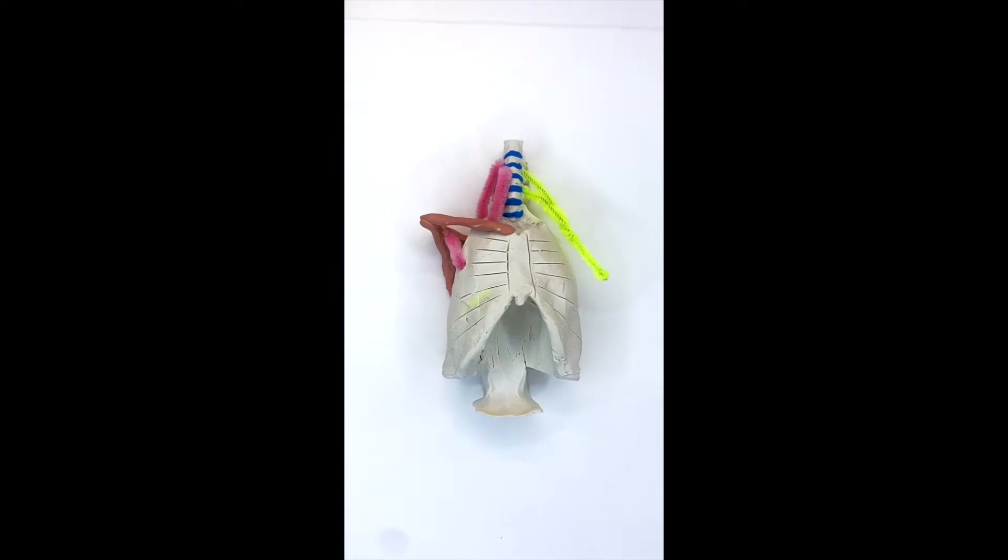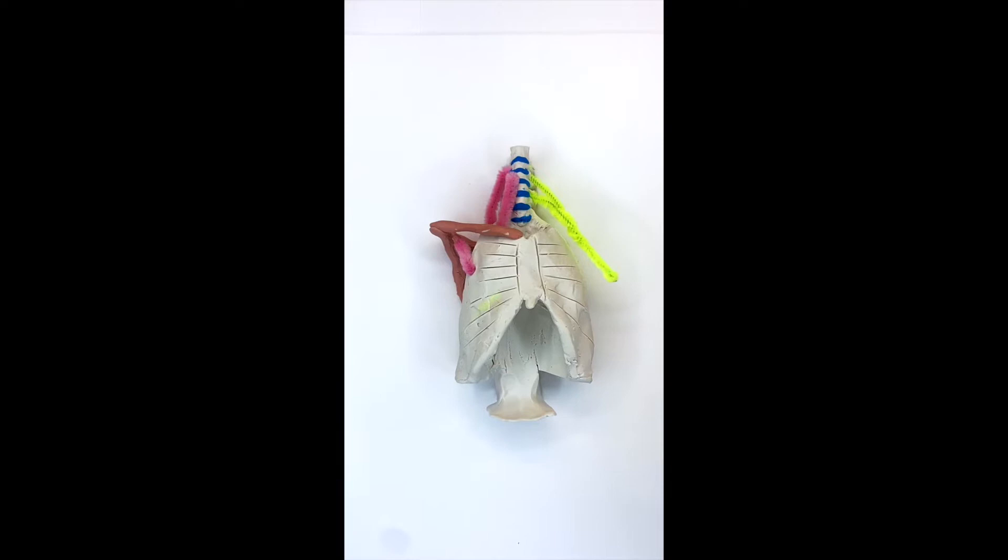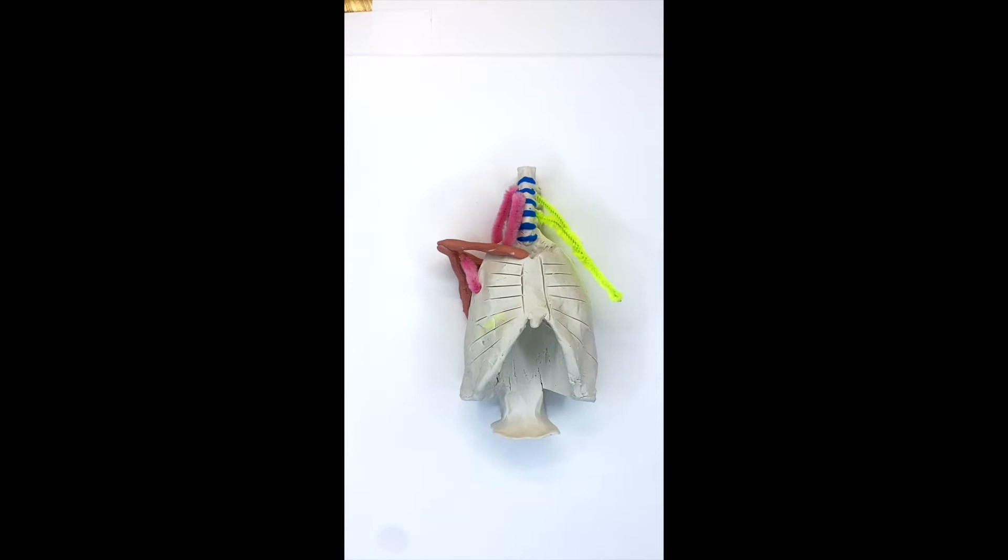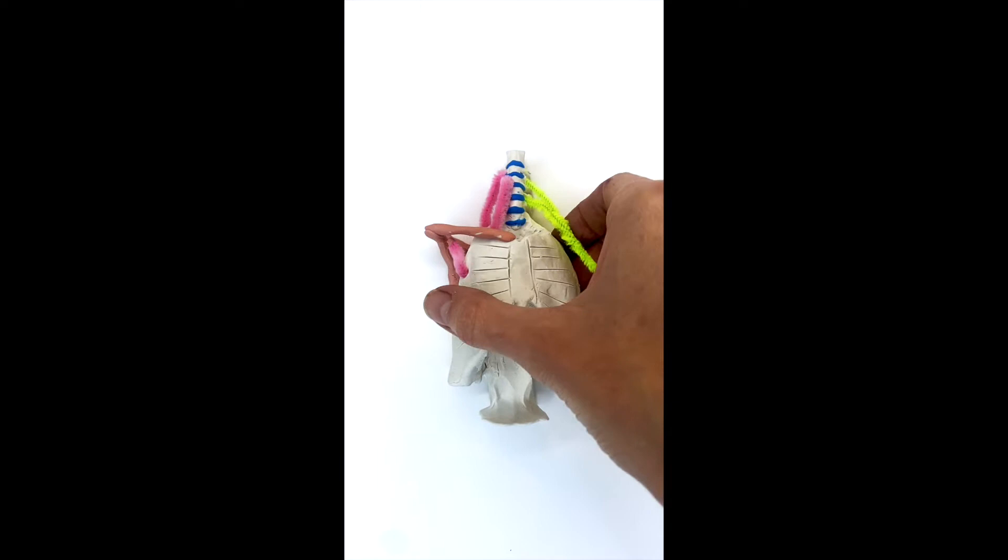I made a model that may help you understand the brachial plexus, which is a bunch of nerves that comes out of your neck and goes down into your arms. And there's different places that these nerves can get compressed.